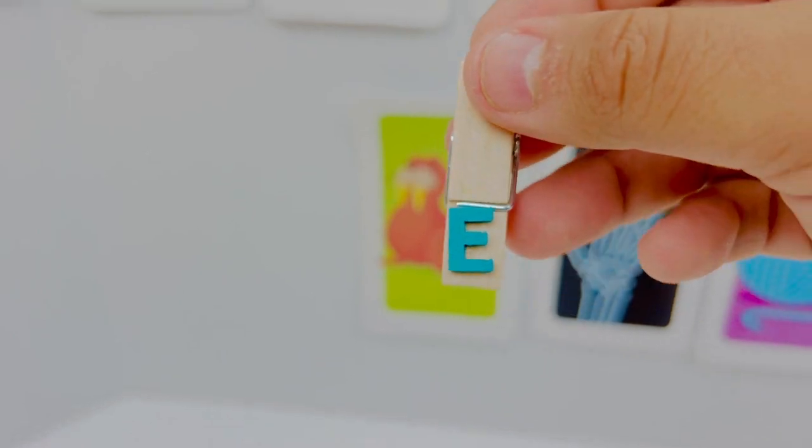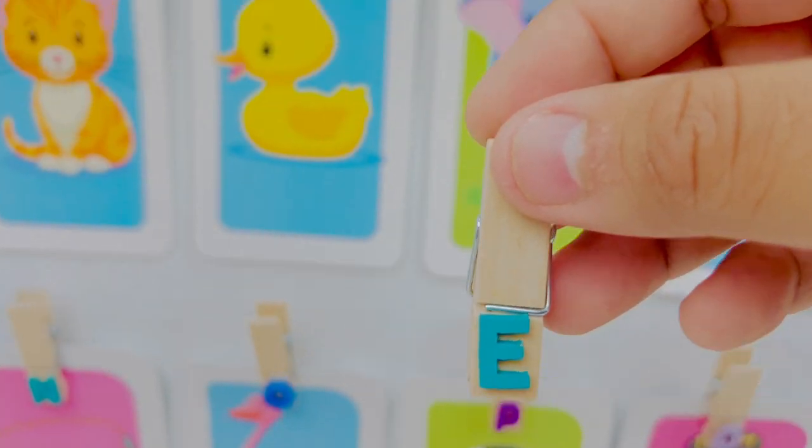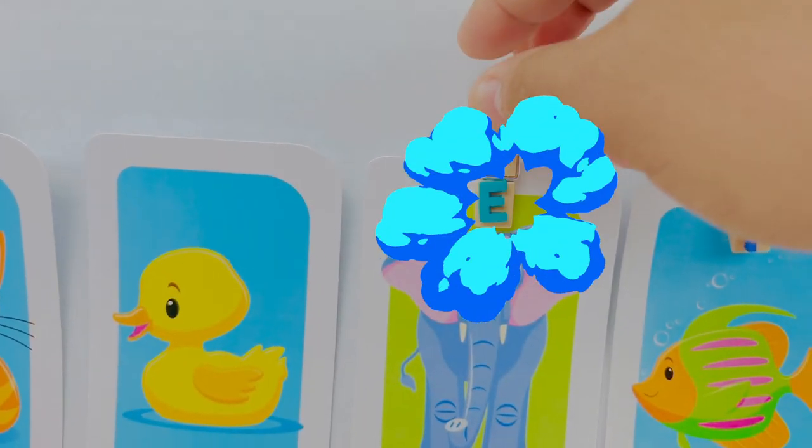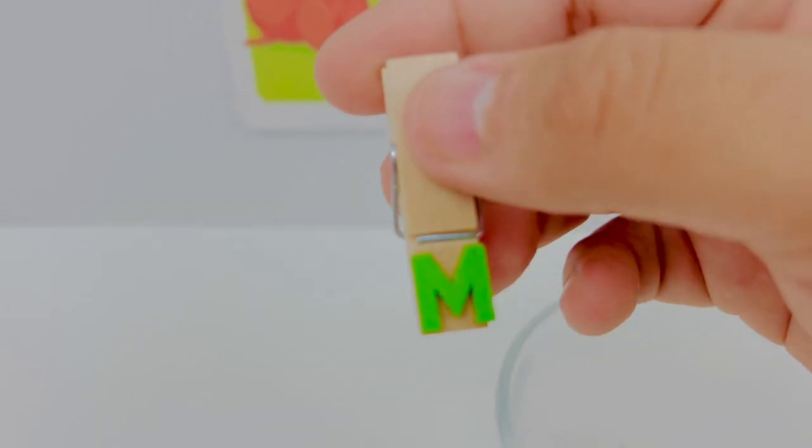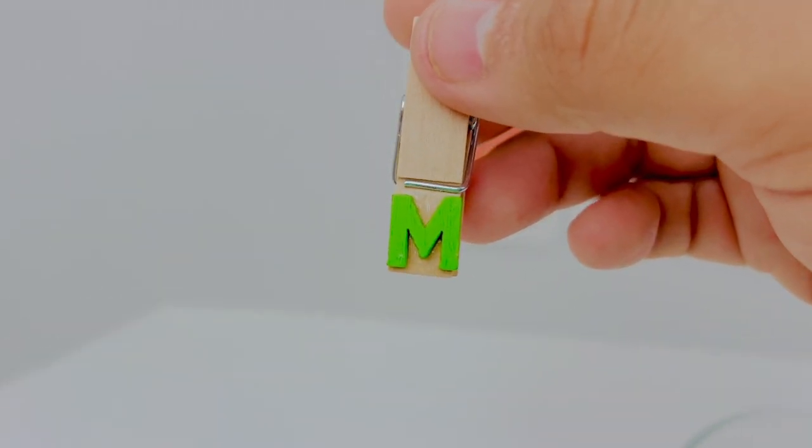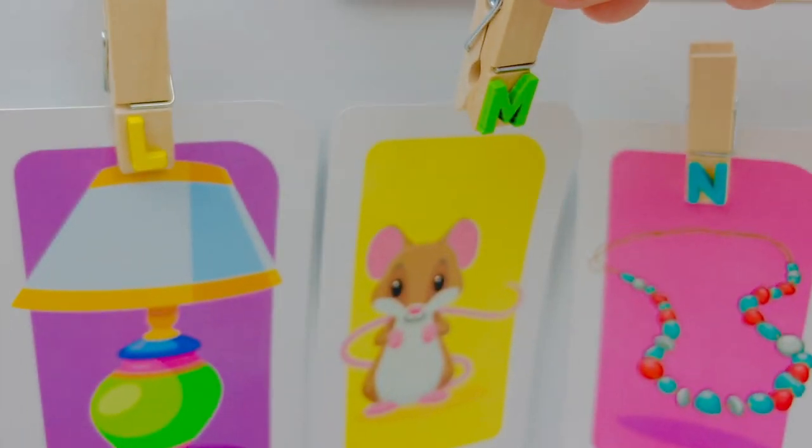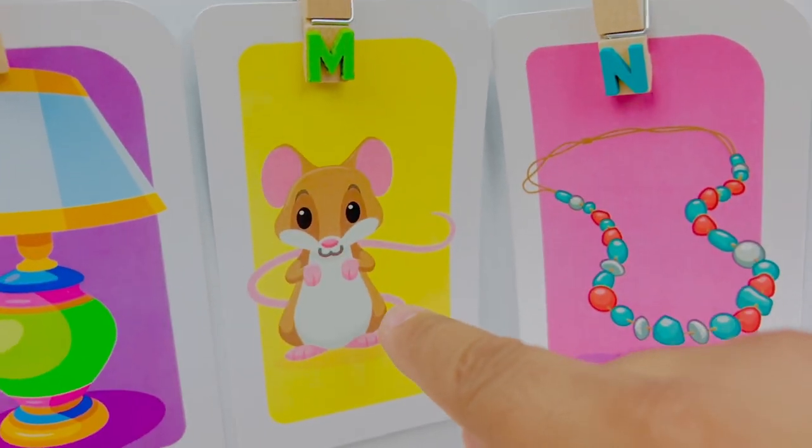This is letter E. E is for elephant. E elephant. This is letter M. Letter M is for mouse. M mouse.